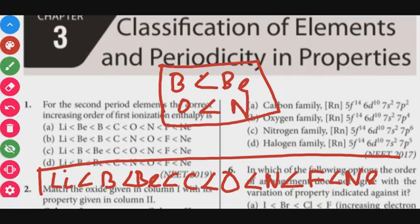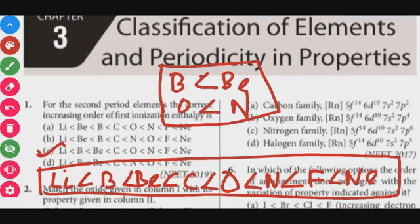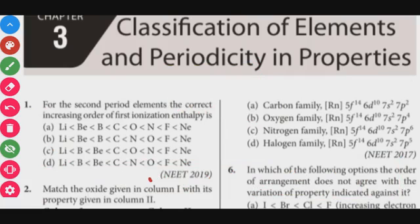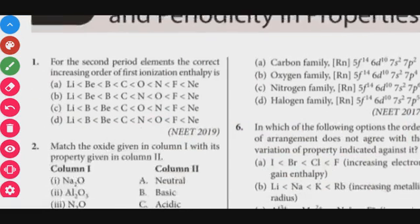This is the correct order of ionization enthalpy. Option number C is the correct answer. This is a 2019 question — very very important.